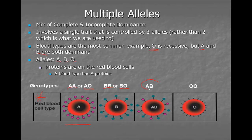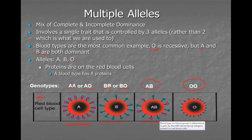Type AB blood has the genotype AB because this is where we see incomplete dominance. Type O blood has the genotype OO, homozygous recessive. Again, the phenotypes are type A, type B, type AB, and type O blood types.